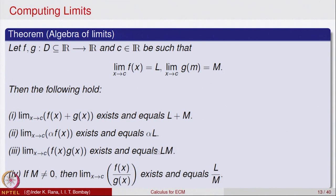Finally, if M is not equal to 0, then f(x) divided by g(x) is defined for all points sufficiently close to c, and the limit as x goes to c of f(x)/g(x) exists and equals the quotient of the corresponding limits — that is L/M. So the limit of the quotient, whenever the denominator limit is not 0, equals the quotient of the limits. These results are very much similar to the algebra of limits for sequences and are very useful in computing limits of slightly more complicated functions.